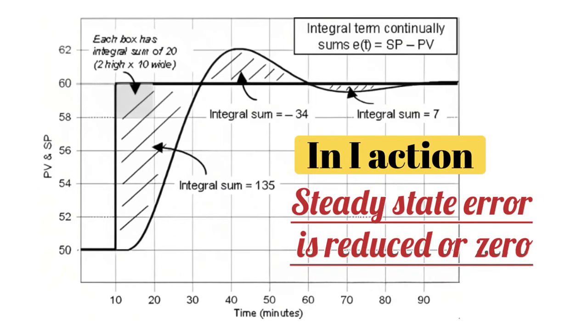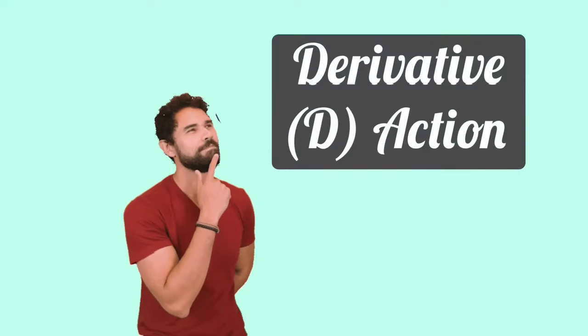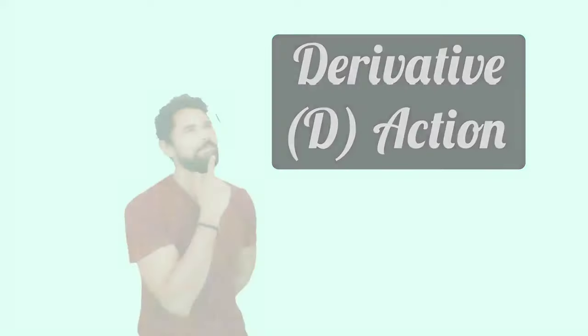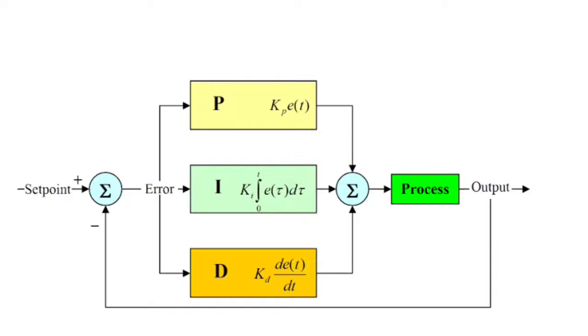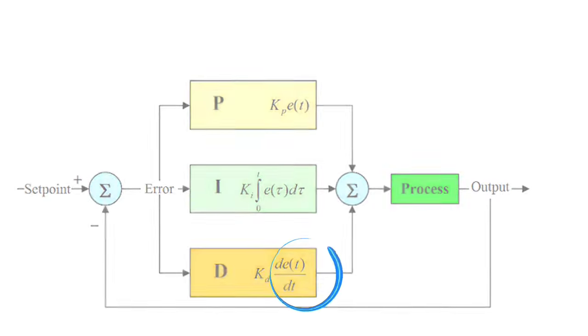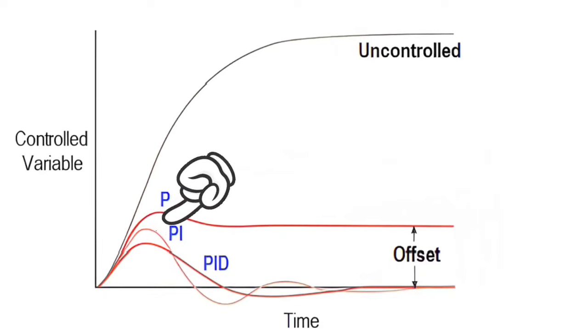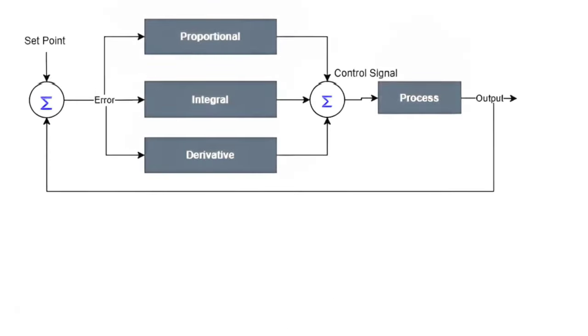Now, let's understand derivative action, means D action. In D action, we control the rate of response of the system. If the response is too fast, the D action will dampen or reduce the response so that the overshoot is less. The derivative action also improves stability.